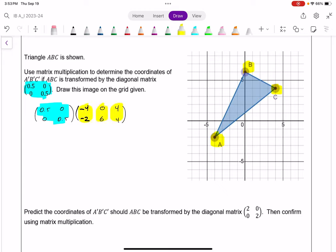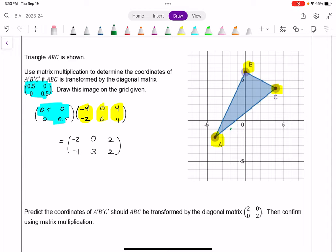All right, again, I could use a GDC, I could do it by hand. Either way, it should be fairly quick. And we get these points. We get negative 2, negative 1, 0 and 3, 2 and 2. So let me draw those and then start to figure out and try to look for a connection between the new image and our transformation matrix. So I'll draw this in green. So negative 2, negative 1, 0 comma 3 and 2, 2.